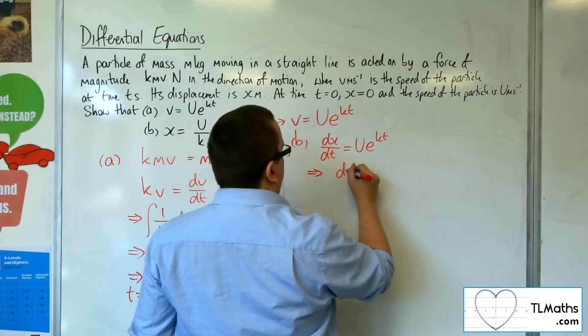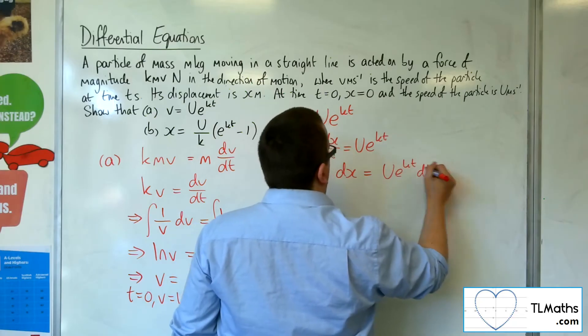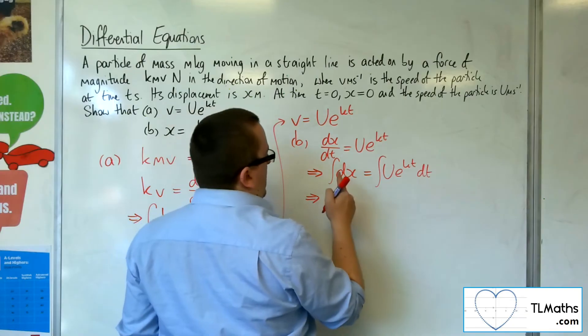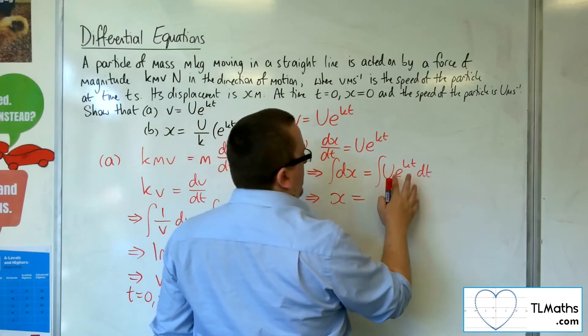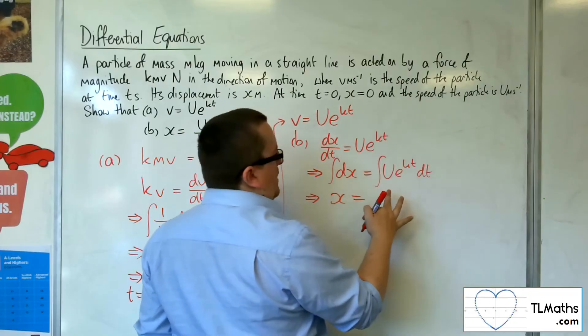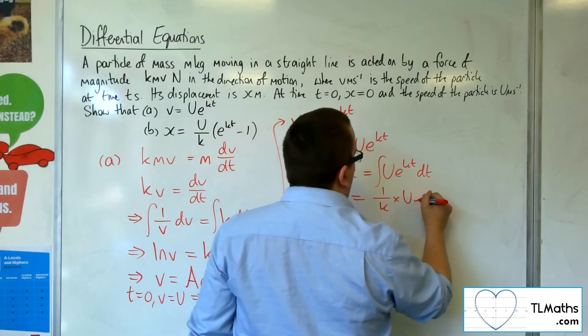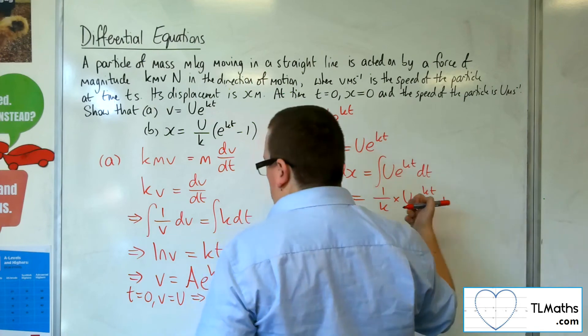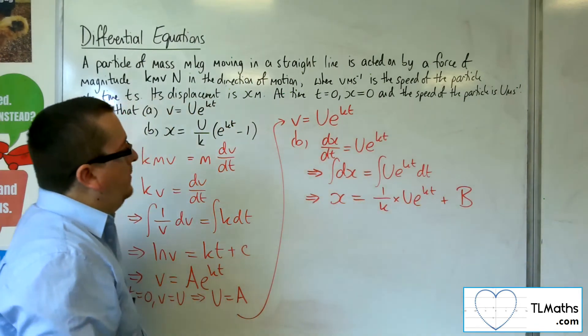So ue to the kt dt, integrate both sides. We get the integral of one is just x, and then we're going to get ue to the kt integrated. So that's one over k times ue to the kt plus some constant of integration. I've already used c, I've used A, so let's use B.